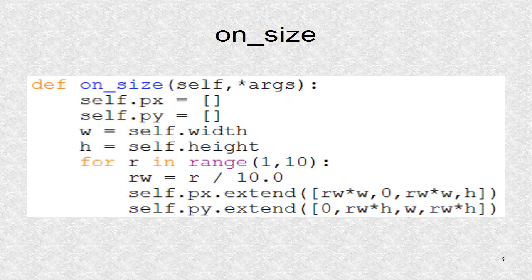The OnSize function is called whenever the size property changes. In the first half of this function, the lists PX and PY are created. They hold the coordinates for 9 horizontal lines and 9 vertical lines.